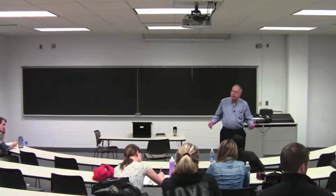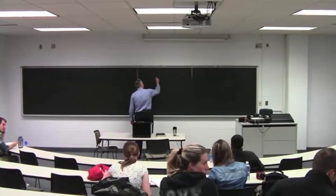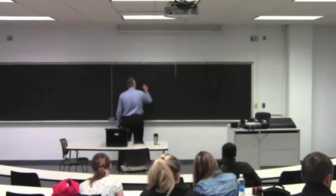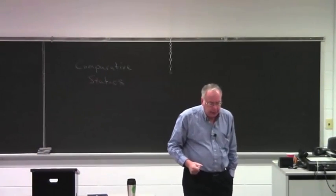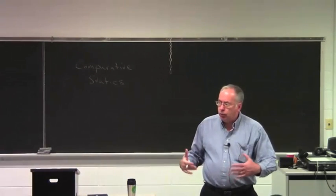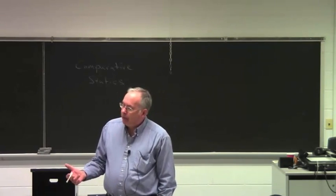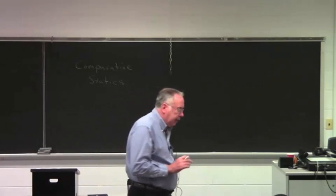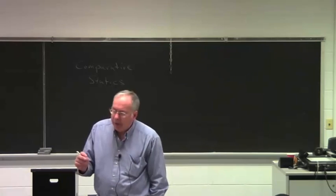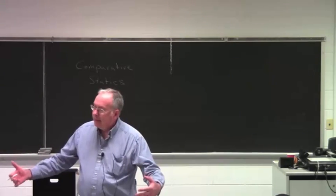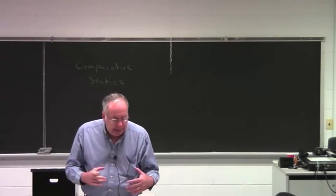We're now ready to talk about comparative statics. In comparative static analysis, what you do is first you have an economic model that you solve for the equilibrium values of your endogenous variables. Once you've done that, you then see how a change in one of the parameters or the exogenous variables affects the equilibrium values of your endogenous variables. And you do that by using partial derivatives.